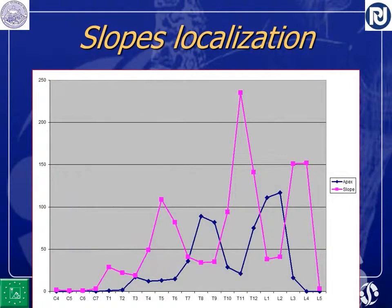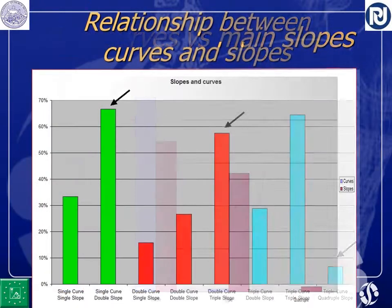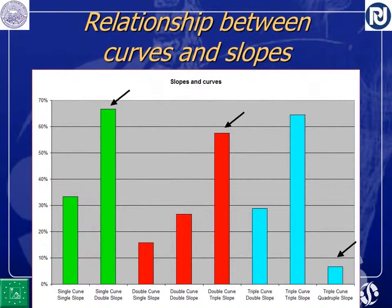What is interesting is that we should have two slopes for each curve — two main slopes. But if we look at the number of slopes, it is not an even distribution. A single curve has a double slope in our sample in 65% of cases, but in 35% there is only one single slope. In double curves you can have triple, double, or just a single slope where only one slope is more important than the others. This is also the situation in triple curves.